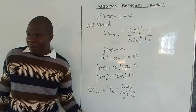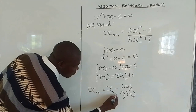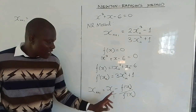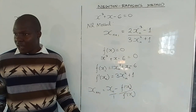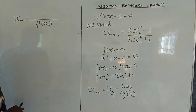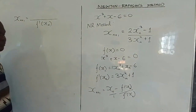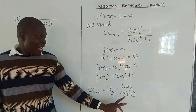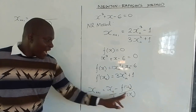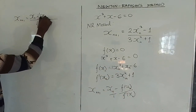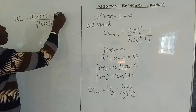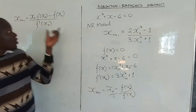After writing the formula, you look for the LCM. Put xn over 1, then cross-multiply: this gives xn+1 = [xn × f'(xn) - f(xn)] / f'(xn). So it is xn times f'(xn), then minus f(xn), all over f'(xn).